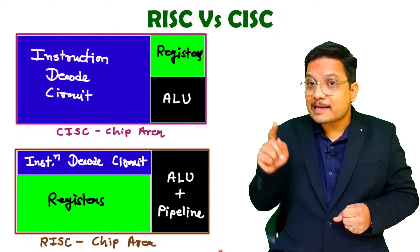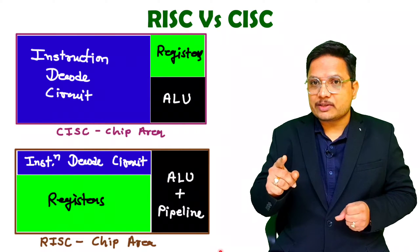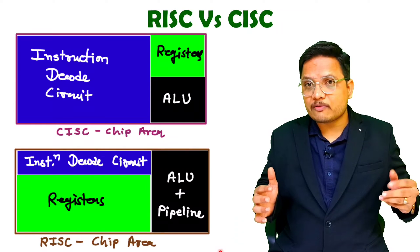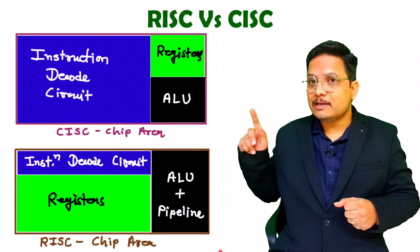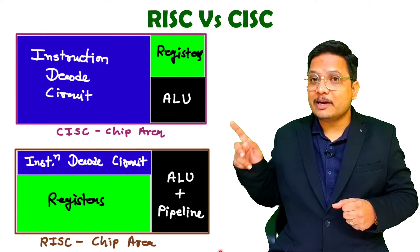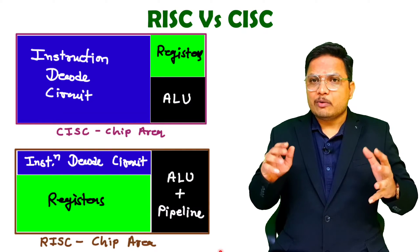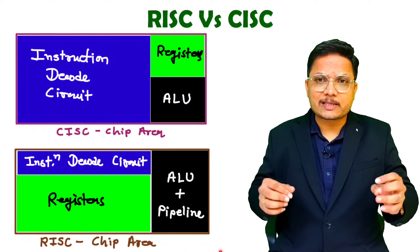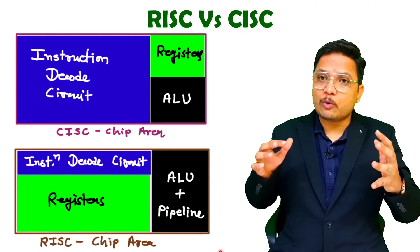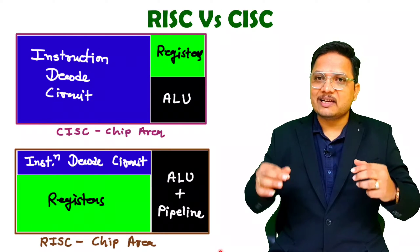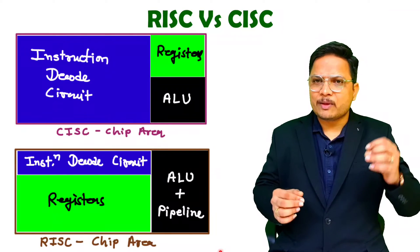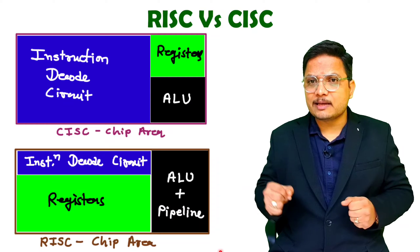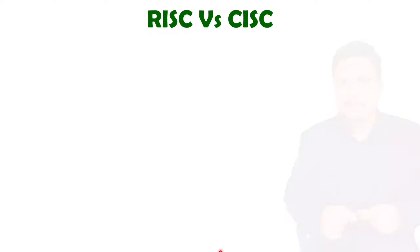Why the reason is you are having more space for execution, more space for pipelining, more space for number of registers. RISC is having less number of instructions, CISC is having complex and more number of instructions, and based on that the chip area that you can see over here. Once you see this, now I can easily explain you how RISC and CISC architecture is having a basic comparison with respect to various parameters.